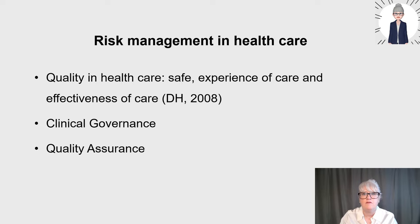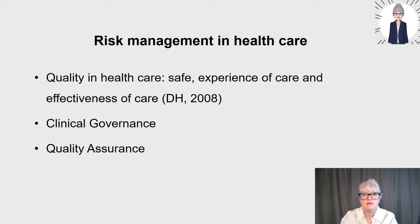Risk management in healthcare also links to other key areas and concepts. The Department of Health definition of quality describes three criteria linked to safety, experience of care and effectiveness of care — so if you don't manage risk, quality of care is impacted. The concept of clinical governance is an umbrella term — a framework or system of accountability to improve the quality of a service, or to sustain a service that already provides quality care and safeguarding standards. Risk management is considered part of clinical governance and is one of its seven pillars. Quality assurance is the process for checking that quality standards have been met, including audits with ongoing monitoring against agreed standards.